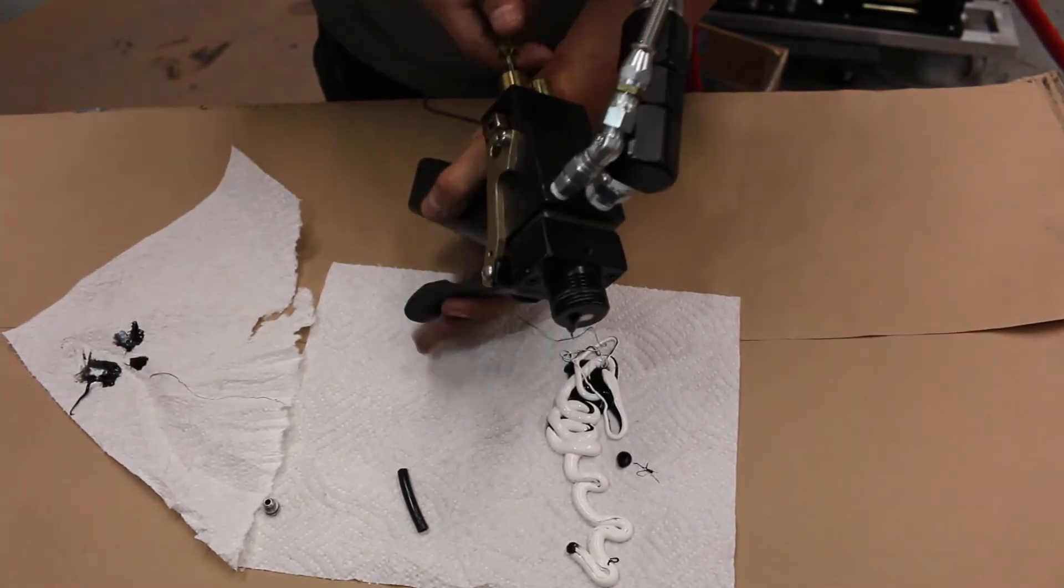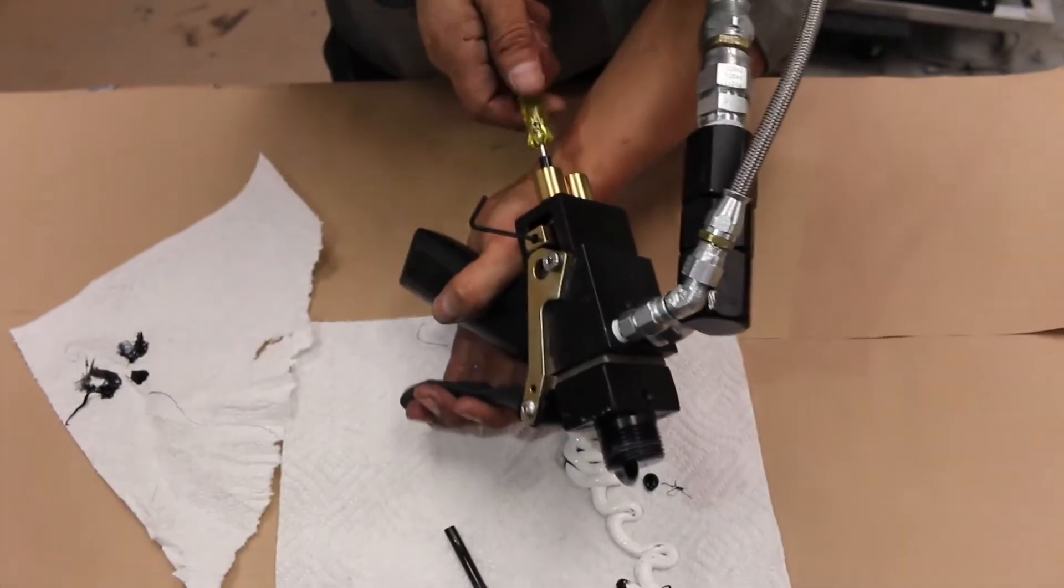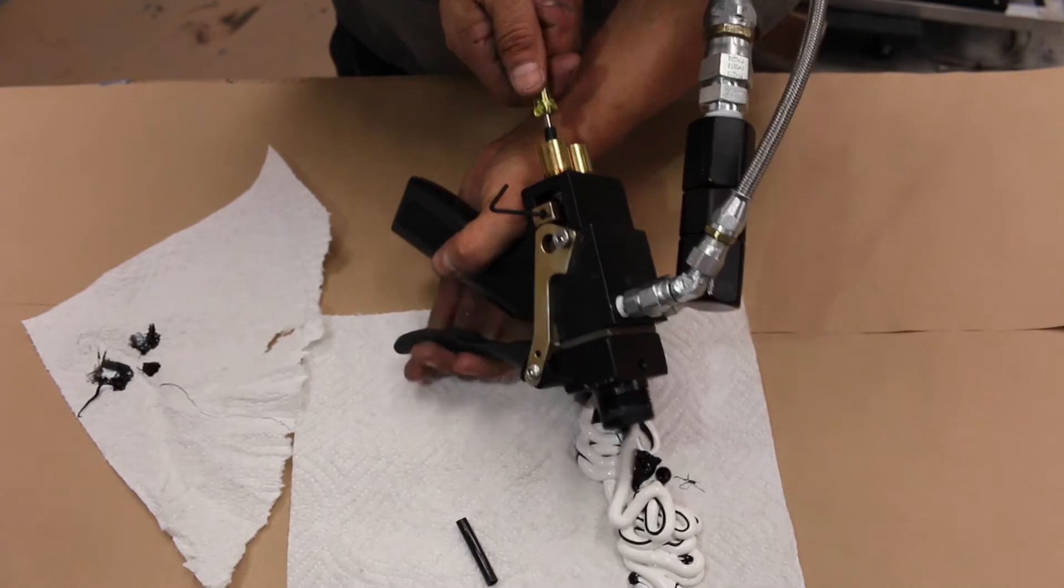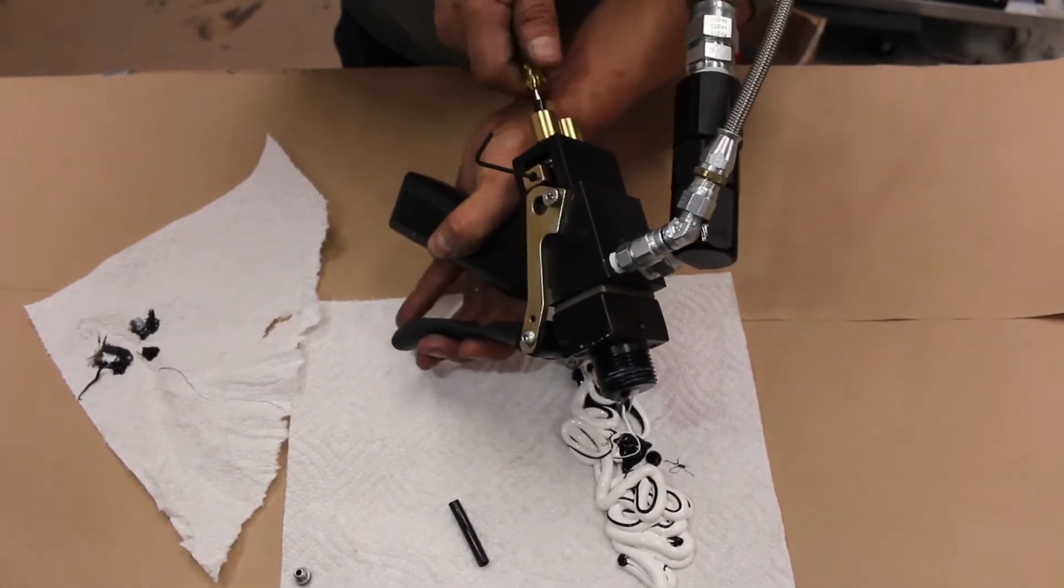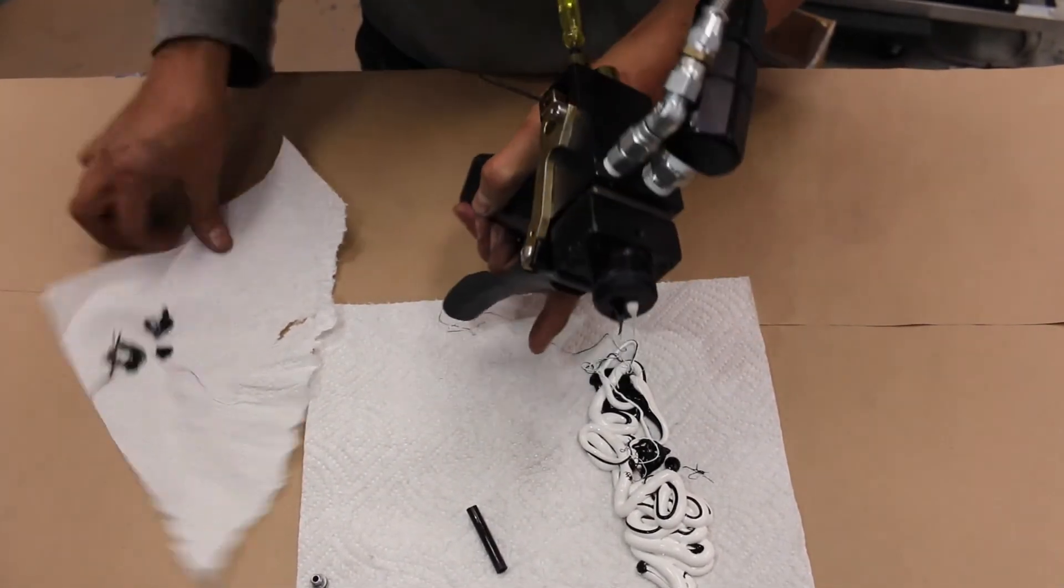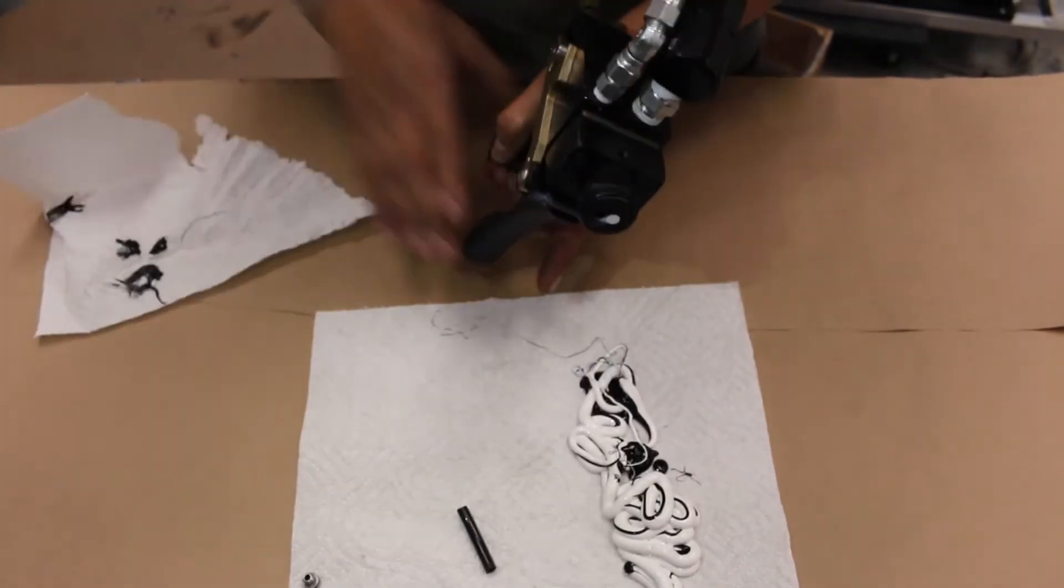While gently squeezing the trigger, slightly turn the screwdriver clockwise. Wipe the end of the applicator and gently squeeze the trigger again to see what material comes out first. Continue this process until both materials emerge at the same time.